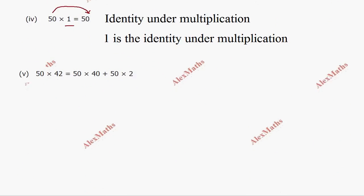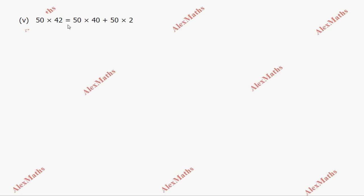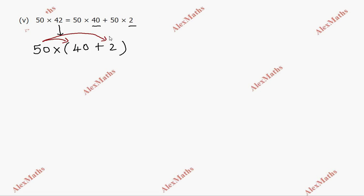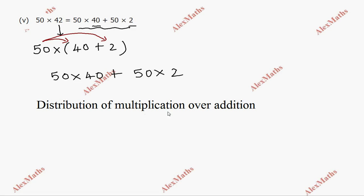Subdivision 5: 50 into 42 equals 50 into (40 plus 2). Here 50 is one number and 40 plus 2 are two parts. So 50 into 40 is one part, plus 50 into 2 is another part. This is the distributive property — distribution of multiplication over addition.